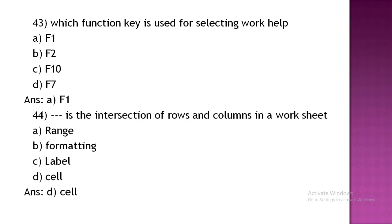Dash is the intersection of rows and columns in a worksheet. Options: range, formatting, label, cell. The correct answer is Option D, cell.